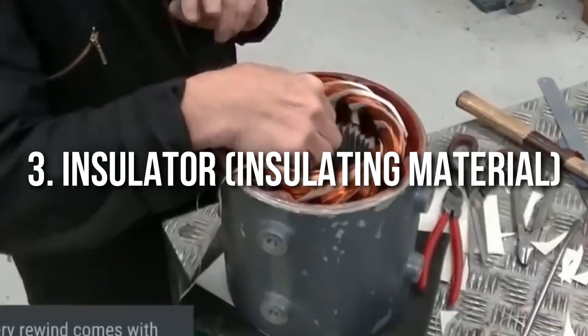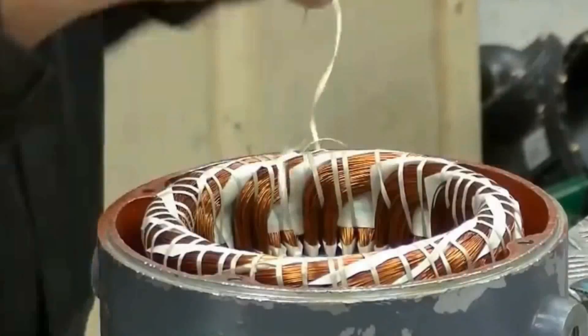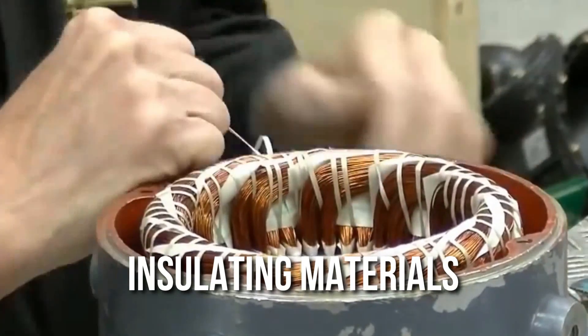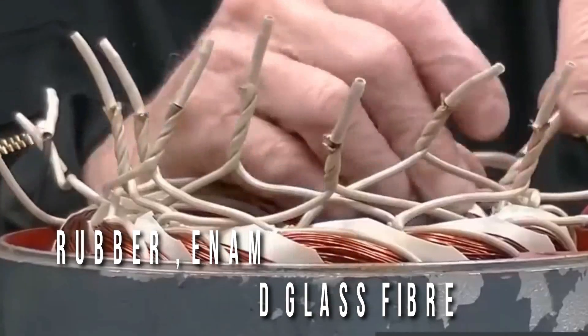3. Insulator. Insulators prevent current from flowing outside of the intended location and materials with such properties are called insulated materials. Polymer compounds such as rubber and enamel, resins, paper, mica and glass fiber are used as insulators.